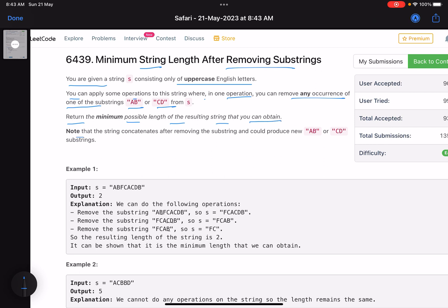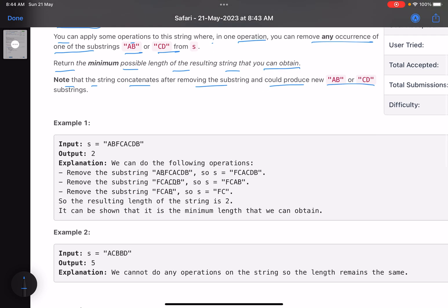Note that the string concatenates after removing the substring and could produce new AB or CD substrings. Let's see, so the first example is ABFCACDB.